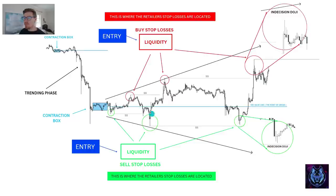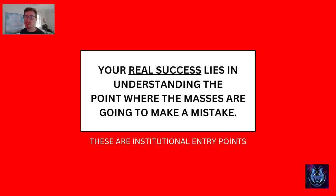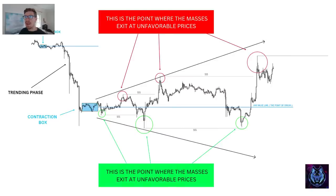If you notice these corner points, we've got these massive wicks. These are all the liquidation points where the masses have actually had their stop losses hit. These are the exact points where the banks and institutions fill their positions and enter into the markets — the zones that we want to focus on when getting into very good trade setups. Your real success lies in understanding that point where the masses are going to make a mistake. These are institutional entry points — where the masses exit at unfavorable prices and where the institutions enter the markets.